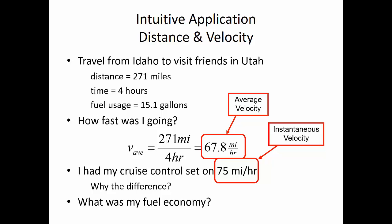What was my fuel economy as I drove to Utah? I drove 271 miles and used 15.1 gallons. So to find miles per gallon, I divide 271 by 15.1 to get 17.9 miles per gallon. Looks like my fuel economy isn't that great — maybe I should consider getting a new vehicle.